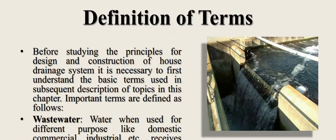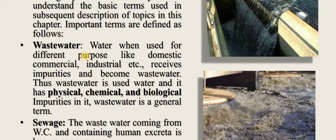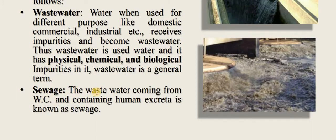Before discussing the principles for design and construction of a house drainage system, it is necessary to understand the basic terms. Wastewater: when water is used for domestic, commercial, industrial purposes, it receives impurities and becomes wastewater, with physical, chemical, and biological impurities. Sewage: wastewater coming out from the WC and containing human excreta is known as sewage.